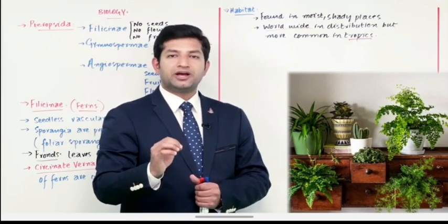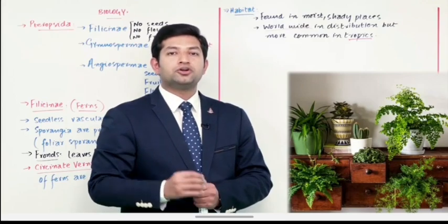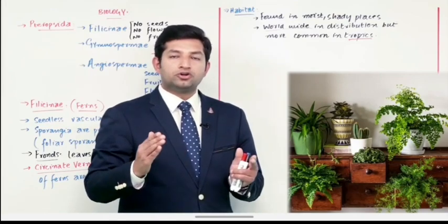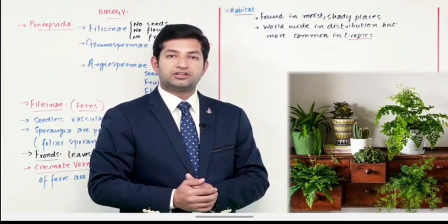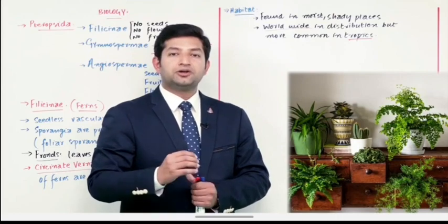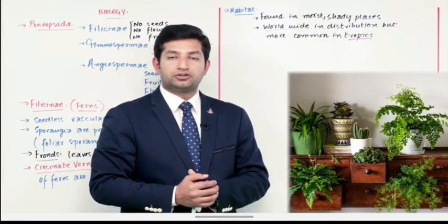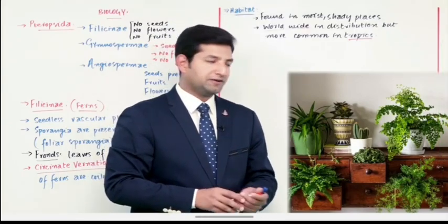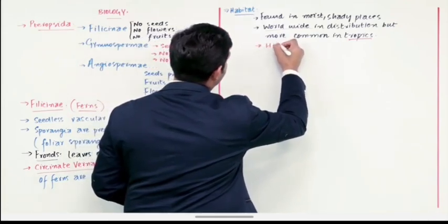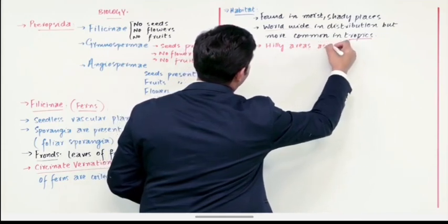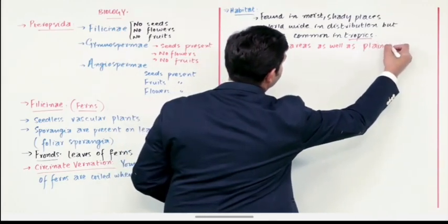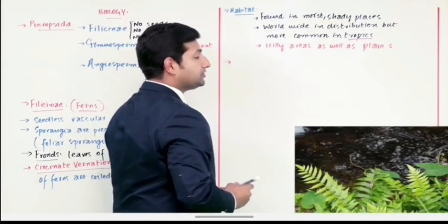और साया जितना ज्यादा होगा, ferns उतने ज्यादा वहाँ पे मौजूद होंगे। यहाँ पे एक tip: अगर आपको indoor plants रखने का शौक है, तो उस सूरत में ferns are one of the best choices. इनकी growth बिल्कुल normal होती है as well as they can be found in plains - मैदानी इलाकों में भी पाए जा सकते हैं।